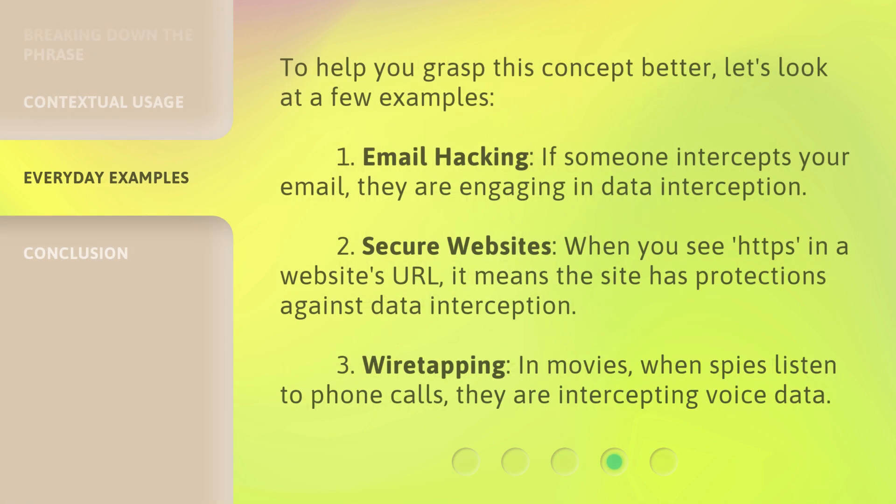To help you grasp this concept better, let's look at a few examples. When you see HTTPS in a website's URL, it means the site has protections against data interception. Wiretapping: in movies, when spies listen to phone calls, they are intercepting voice data.